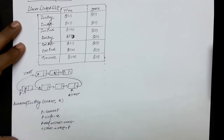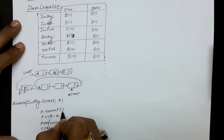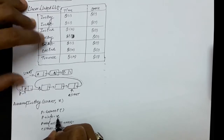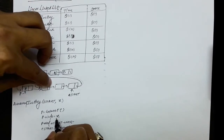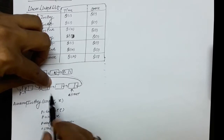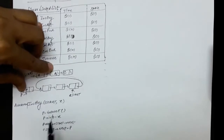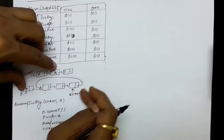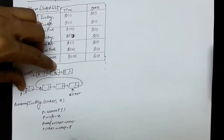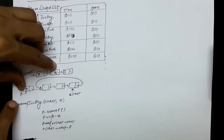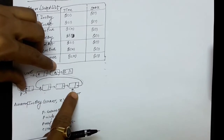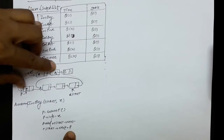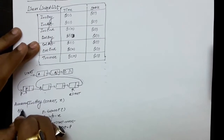Let us review insert beginning once more. We take a new node by calling P equals to get node. We store information X in this node. Then P dot next keeps the address of the earlier first node, which is C start dot next. After this, C start dot next equals to P, so the last node now points to the new first node. This completes the insert beginning function.